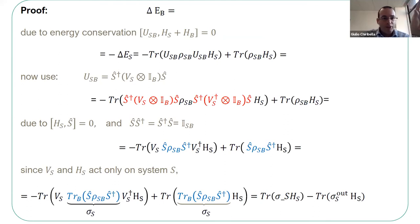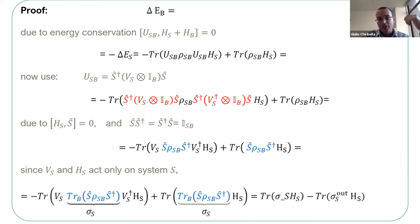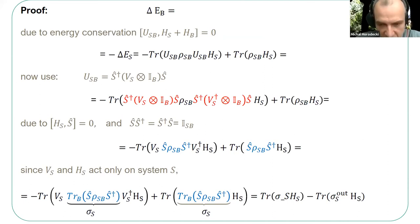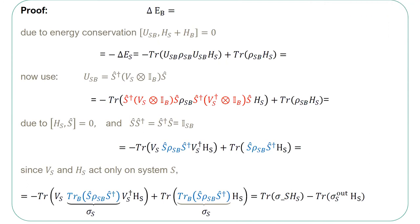A question from the chat: is the control marginal procedure a way to simulate coherences in the energy basis? The answer is yes—it encapsulates everything, including coherences of the system itself and entanglement between the system and battery. It is about coherences of the total working body and battery system.